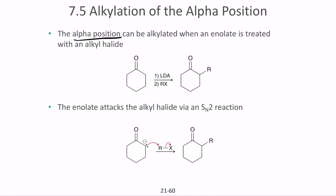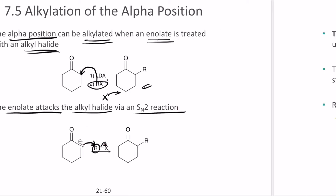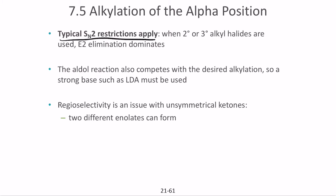Next is alkylation of the alpha position. The alpha position can be alkylated when an enolate is treated with an alkyl halide. The halide X leaves the structure and the R group bonds to the alpha carbon. The enolate attacks the alkyl halide via an SN2 substitution, where X takes the electrons and leaves, and the enolate bonds to the alpha carbon. This is a typical SN2 reaction, meaning only methyl or primary alkyl halides are generally used.